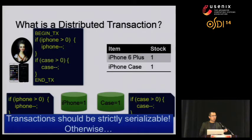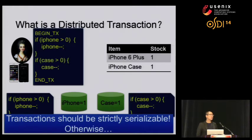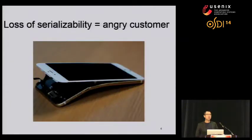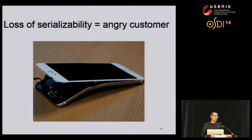The thing with distributed transactions is we need to apply some form of concurrency control protocols to ensure that these transactions are strictly serializable. Otherwise, in this case for example, if we have concurrent transaction requests trying to purchase the same things, then Marie may receive an iPhone without a case. And without a case to protect her iPhone, this will be what's happening in a few days. Of course, this is just a joke.